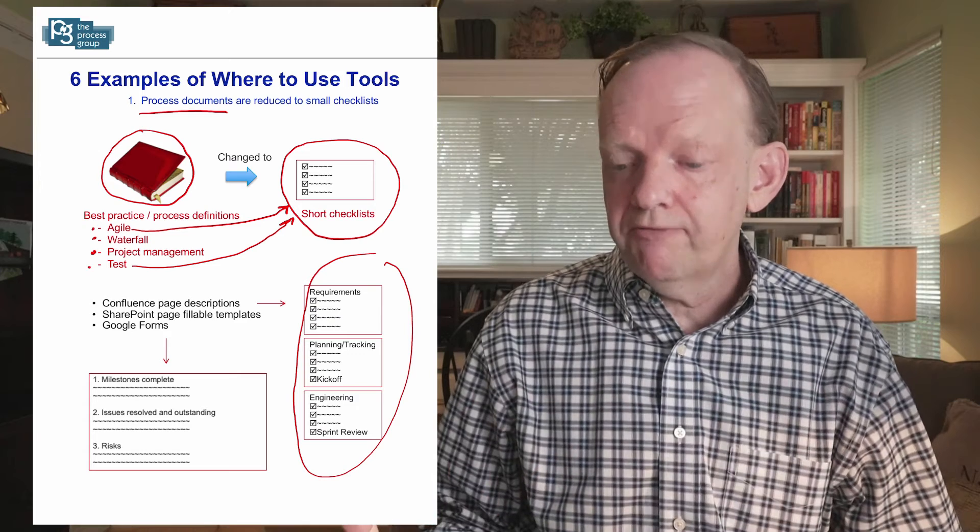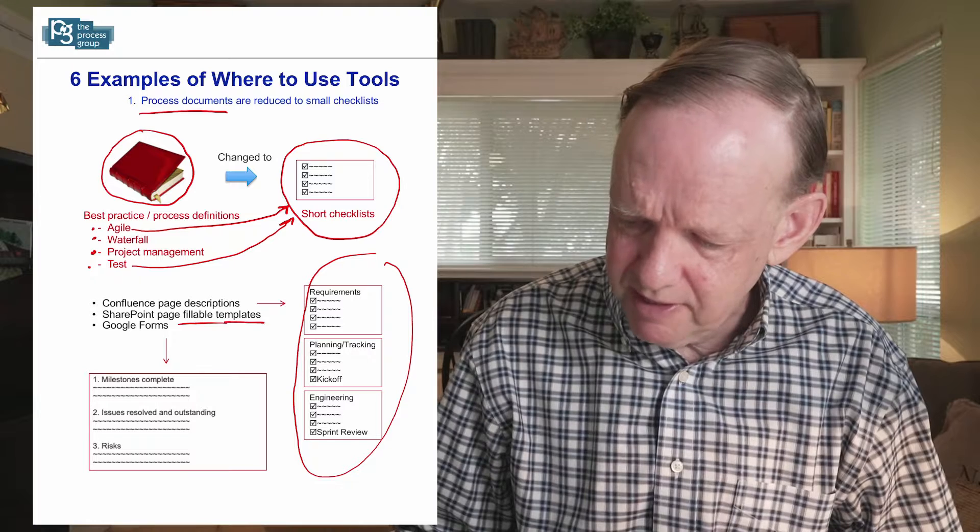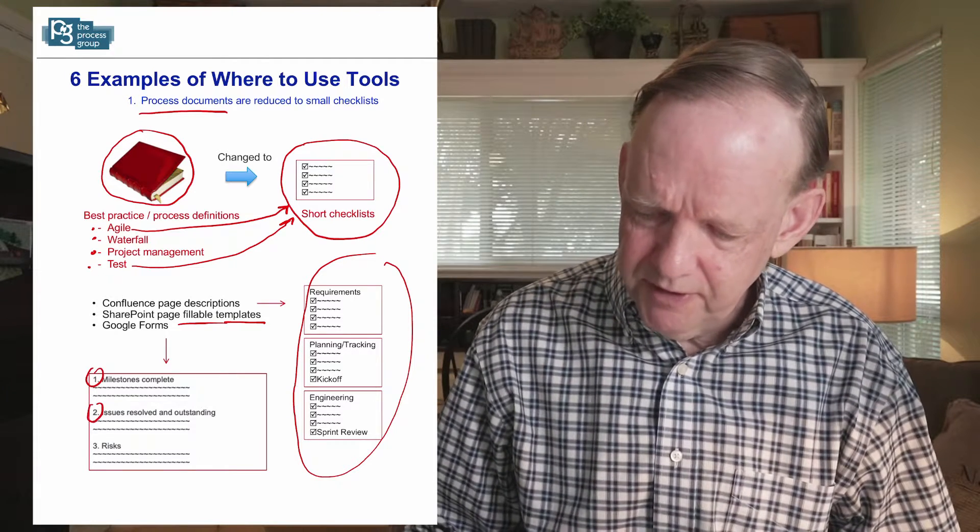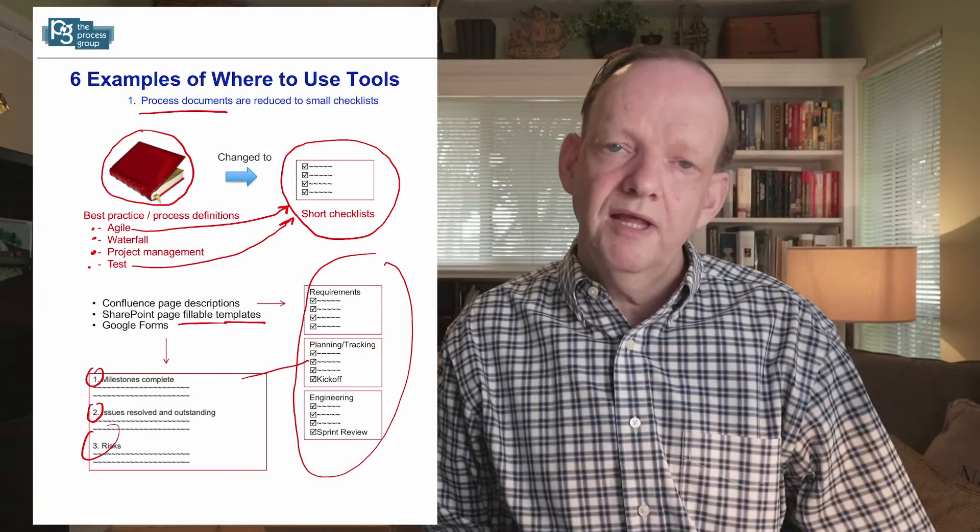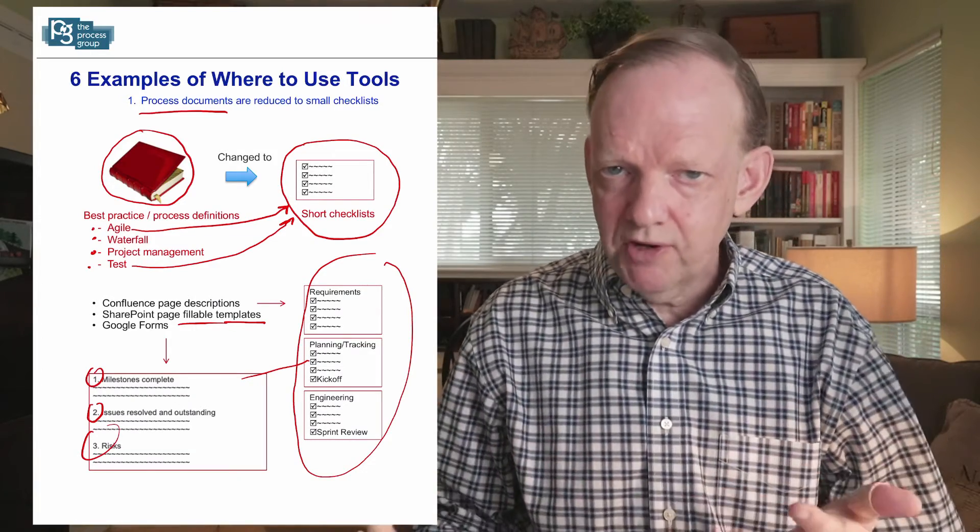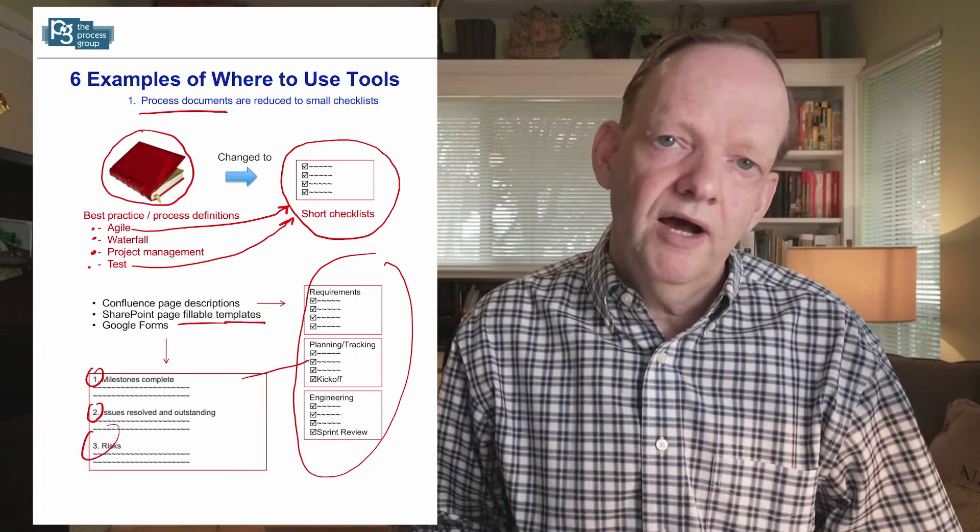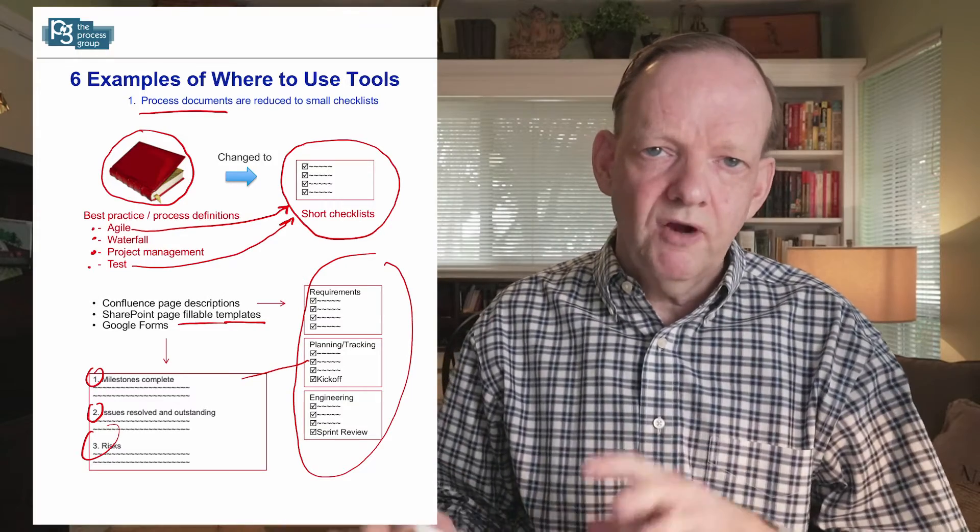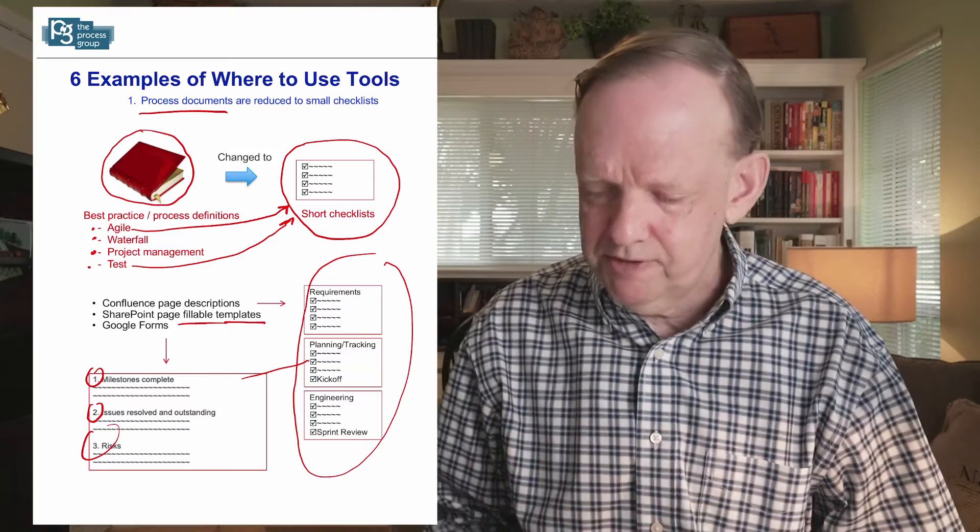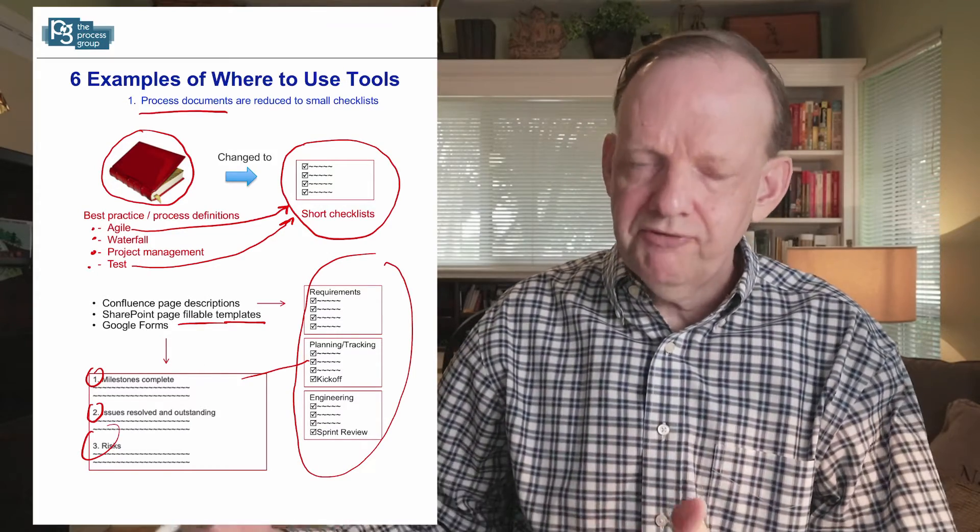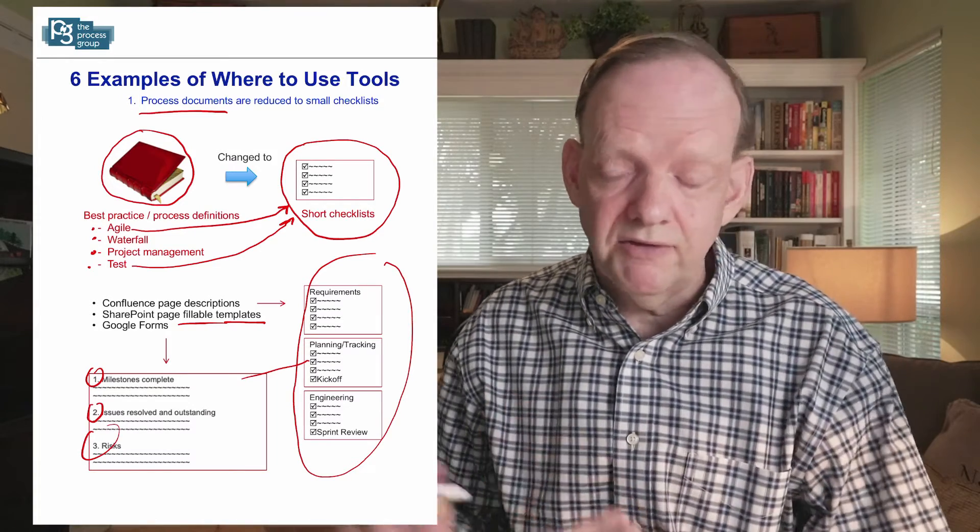Now, one step above that is to make these into SharePoint pages that are fillable templates. Maybe there's a set of steps we go through. Maybe one of these checklists is the set of steps one, two, three, four. When you pose a question to the person or the team, like what are the milestones, issues, or risks, that template could be a Wiki page, SharePoint page, or Confluence page, and they're typing in the results. So now the checklist becomes a fillable template that can be stored, navigated, and found later on.